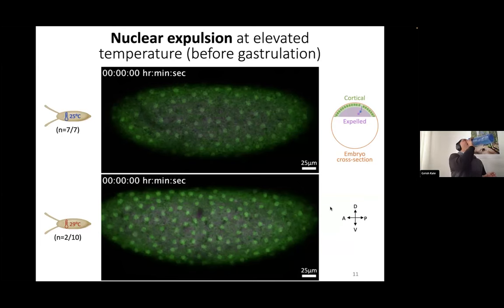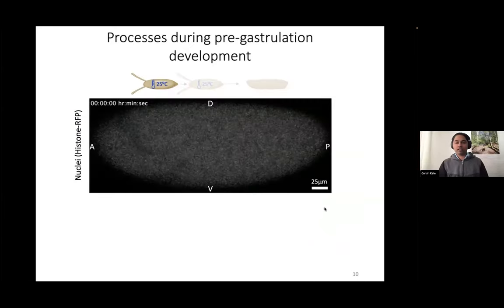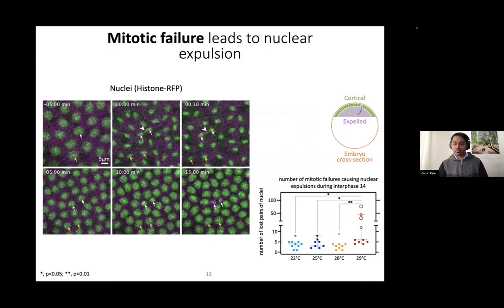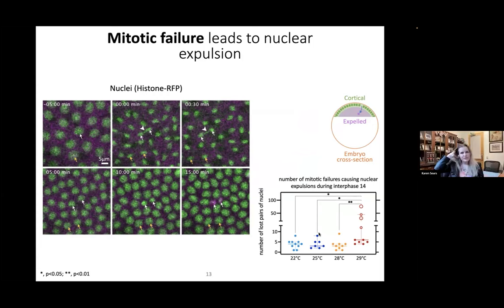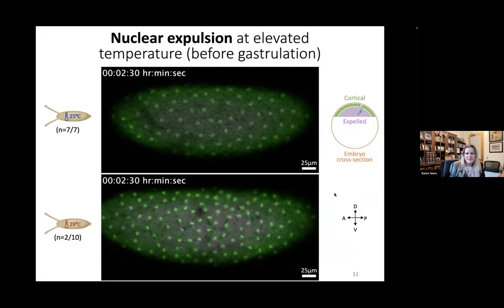Do the nuclear expulsion events happen at around the same time across embryos — for example, during cycle 14? Yes. Cycle 14 is really special. At that stage the nuclear density is so high that they're more vulnerable. In the movie shown, it looked like the nuclei being internalized were all in the same region. Is this consistent? Is there something about that particular part of the embryo? It does show this wave in one part — is there something about that part?